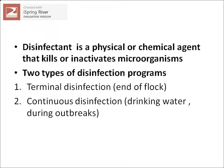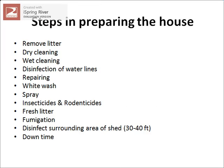A disinfectant can be a physical or chemical agent — most commonly chemicals are used for disinfection. Disinfectants kill or inactivate microorganisms. In poultry, there are two types of disinfection programs: terminal disinfection, practiced when the flock ends to prepare the farm for the next flock, and continuous disinfection, which involves sanitation of drinking water or continuous disinfection procedures. Here you can see the different steps to prepare the house or shed for the next batch.